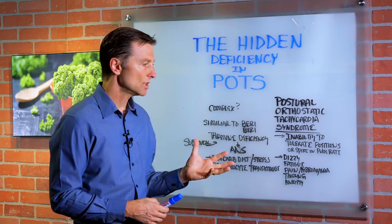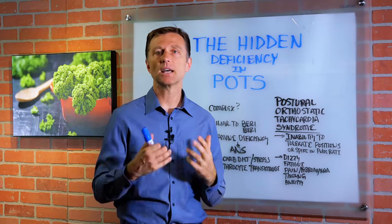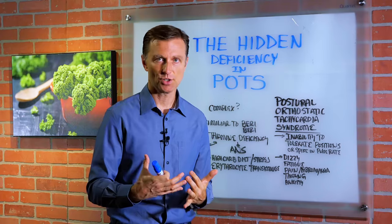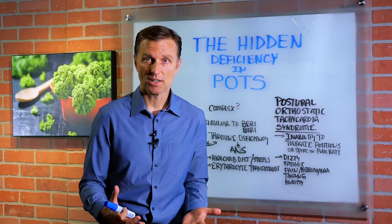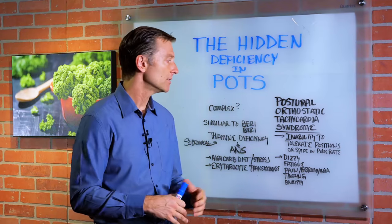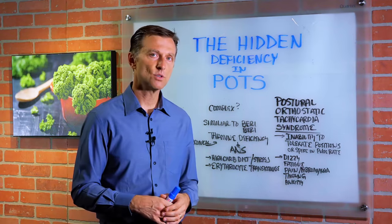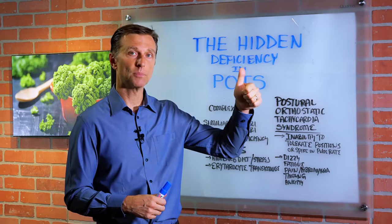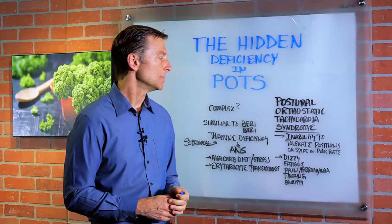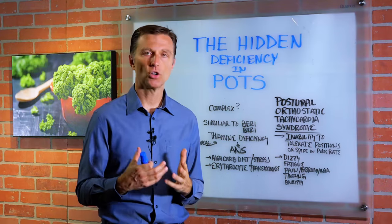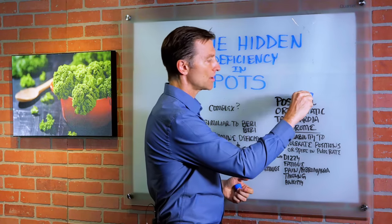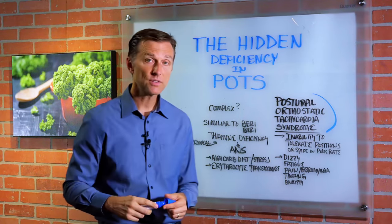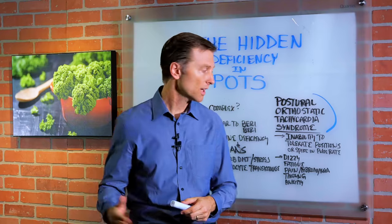This is a condition which involves the inability to tolerate different positions. So let's say the person gets up too fast or just even gets up in general and they're feeling dizzy, they have to sit down, or they get up and they have this huge spike in pulse rate like 30 points. There's a problem with a system called the autonomic nervous system. So this condition is a dysfunction of the autonomic nervous system that is in the background that's not working correctly.